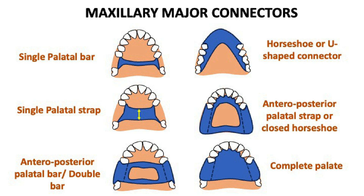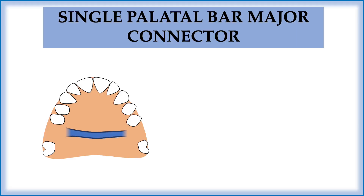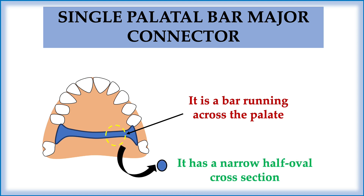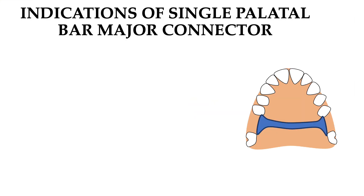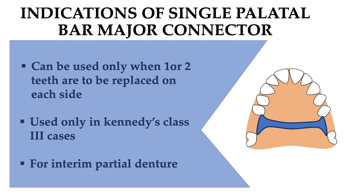In this video we will discuss only the single palatal bar, palatal strap, and double bar connector; the remaining three are discussed in part two. Beginning with the single palatal bar major connector — as the name suggests, it contains a single bar running across the palate. In cross-section it has a narrow, half-oval shape.